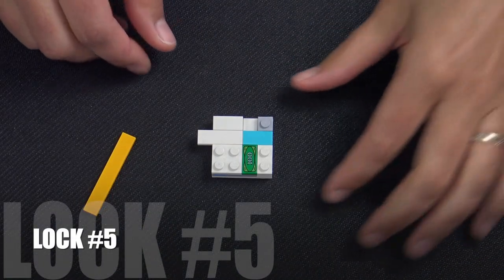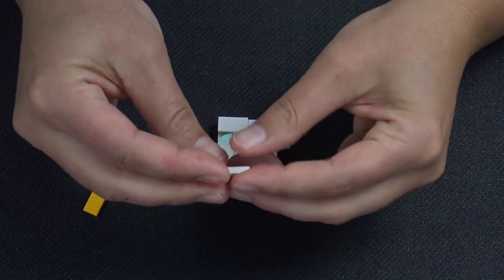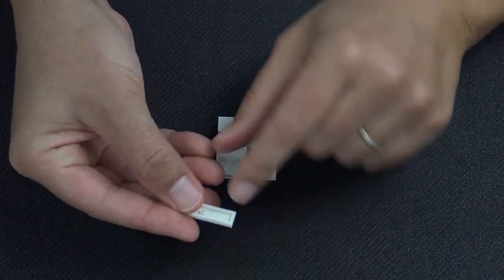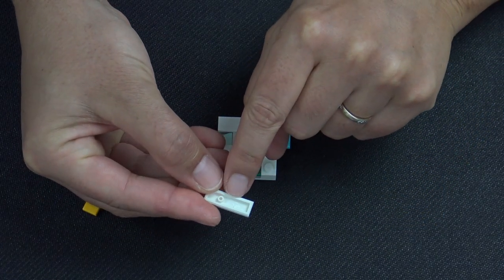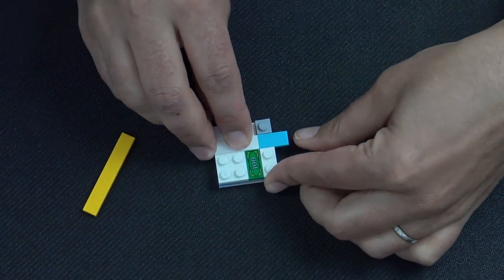All right, lock number five. This one has a one by three tile with one of the center tubes removed, this one right here, so that's what allows it to slide.